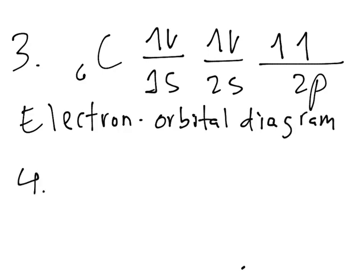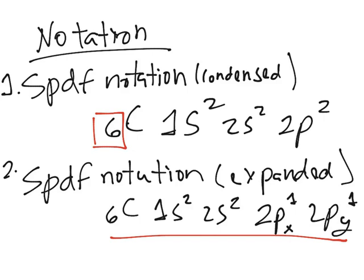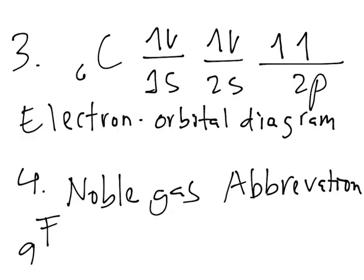This isn't really considered a fourth type of nomenclature, but it's a noble gas abbreviation. Instead of writing the whole thing like 1s² 2s² 2p⁶ and so on, you can write the noble gas before it. Let's do carbon. It's 1s² 2s² 2p² from the previous examples. You look at the periodic table and find the noble gas before it—that's helium.